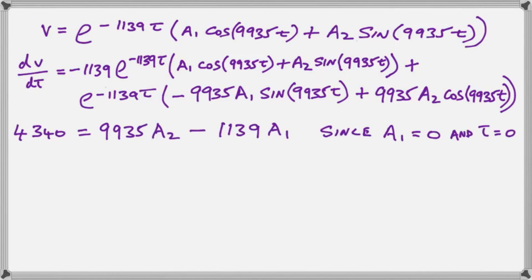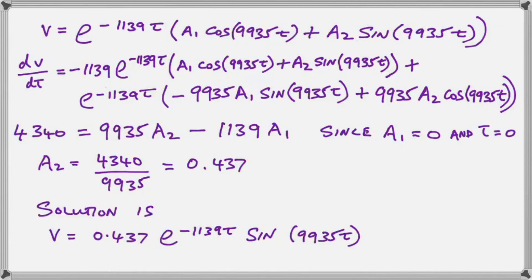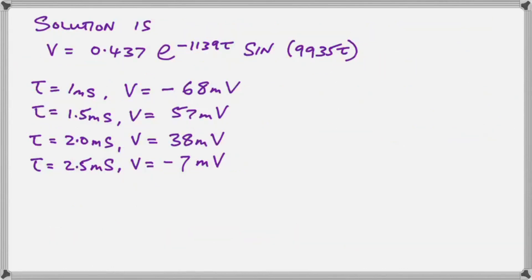And therefore what we end up with is our 4,340 equal to 9935A2 minus 1139A1 make sure you understand this and why it's so but what that results in is that A1 since it is 0 it means and at t is equal to 0 it means that our A2 is simply going to be the 4340 divided by our 9935 our final solution therefore is A2 times the exponential term times the sine term.